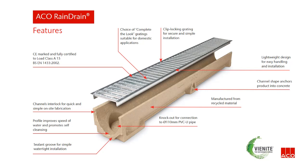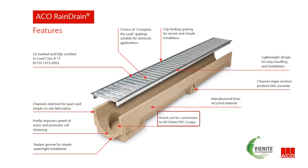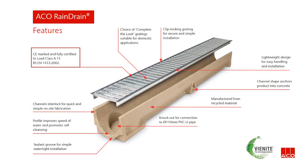Akko Rain Drain is a lightweight channel drainage system designed to provide surface water drainage for a range of domestic applications. It comes as standard with a galvanised steel grating, however you can modify the finish using our range of complete-the-look gratings. A clip-blocking grating allows for secure and simple installation — it just pushes on. The channel shape anchors the product into concrete. There's a knockout for connection to 110mm PVCU pipe. The profile improves speed of water and promotes self-cleansing. Channels interlock for quick and simple on-site fabrication. CE marked and fully certified to load class A15.